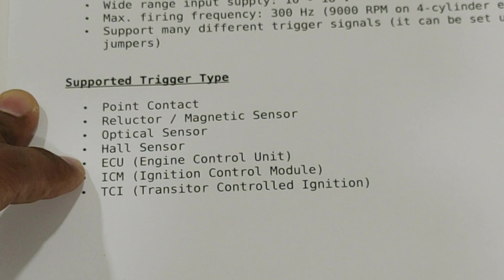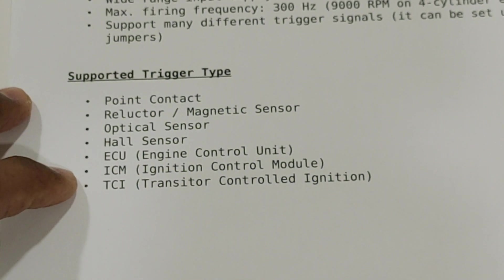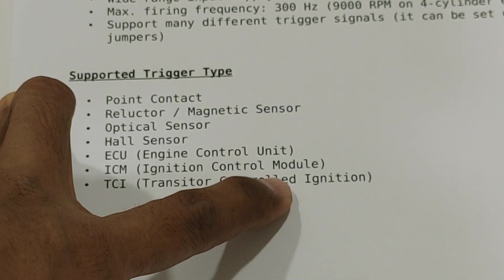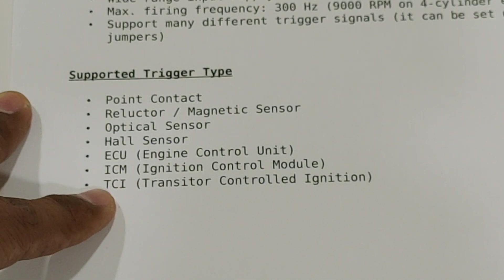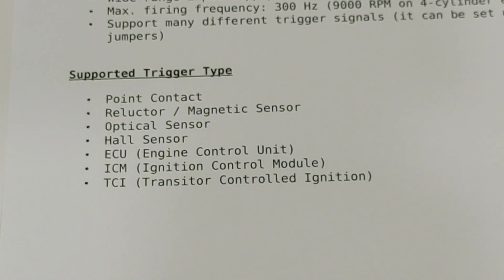Six is the ICM ignition control module, and seven is TCI or transistor controlled ignition.